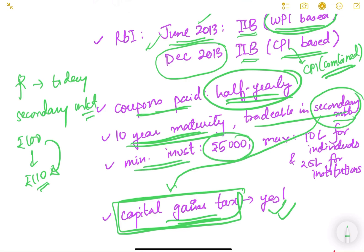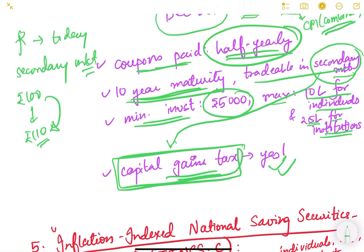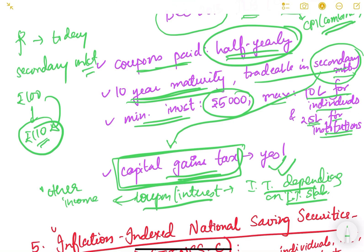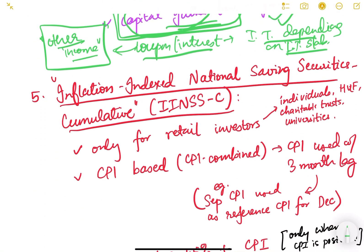For IIBs, the minimum investment was 5,000 rupees and the maximum was 10 lakh for individuals and 25 lakhs for institutions. Capital gains tax was applicable on any capital gains from secondary market trading. Coupon income was taxed as income tax under the 'other income' head, depending on the investor's income tax slab.